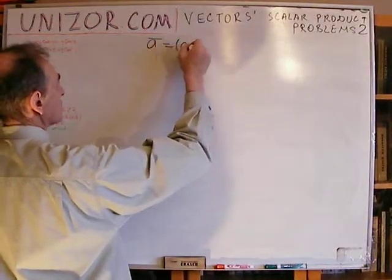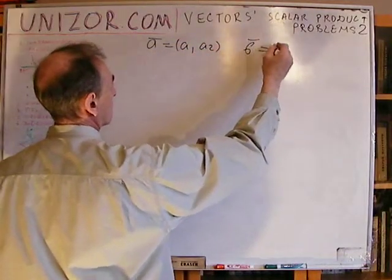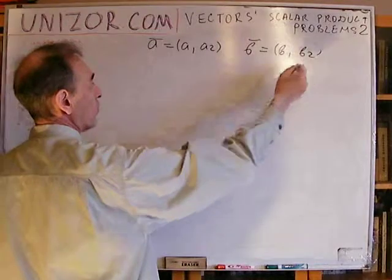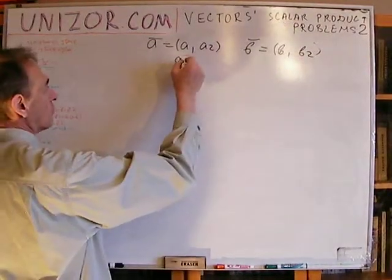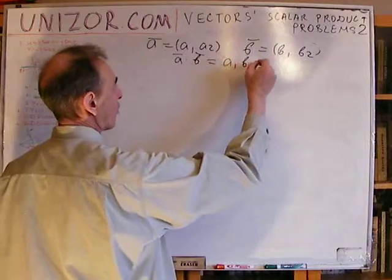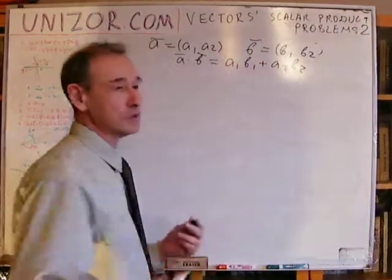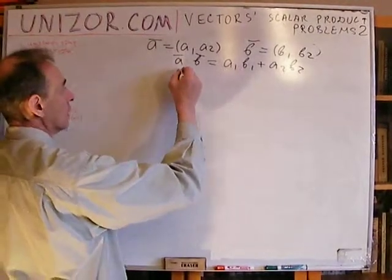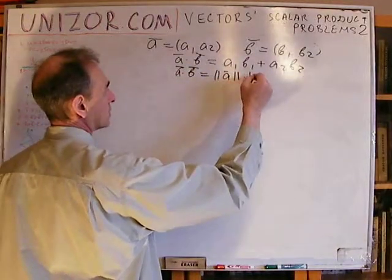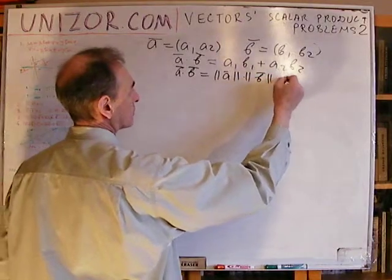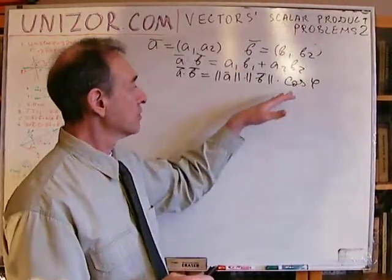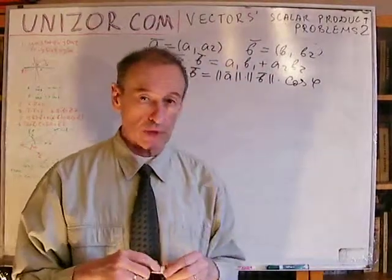In the two-dimensional case, which is a little easier, if you have two vectors with coordinates a1, a2, and b1, b2, then in coordinate form their scalar product, according to these rules, must be expressed as a formula in coordinate form. Or, geometrically speaking, it's expressed as the length of one vector times the length of another vector times the cosine of the angle between them. So we have two representations, both derived from those rules.